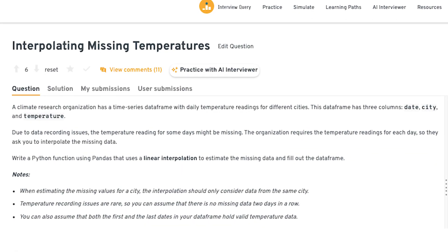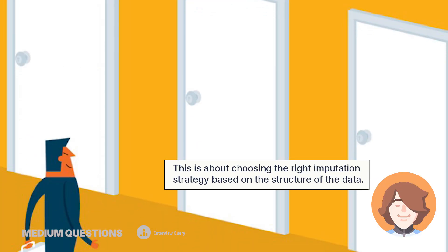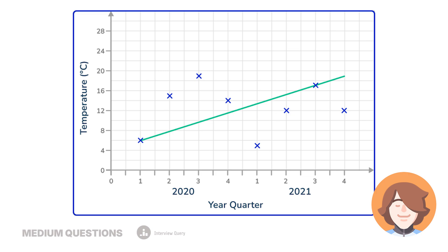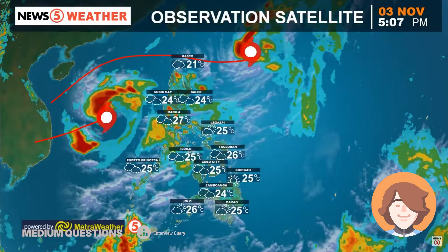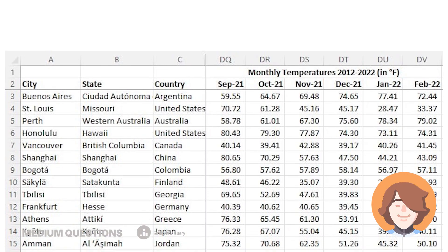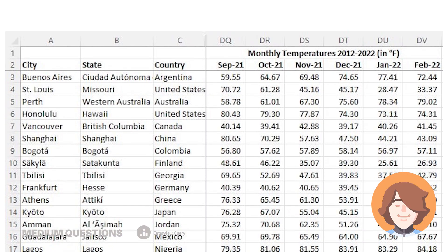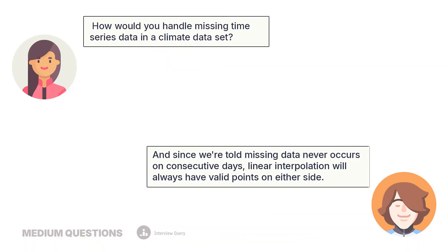How would you handle missing time series data in a climate dataset? This is about choosing the right imputation strategy based on the structure of the data. In time series problems, especially with sensor or measurement errors, context matters more than general rules. Since it's time series data and we know the first and last entries are valid, I'd use linear interpolation per city to fill the gaps. This assumes temperature changes gradually over time, which is reasonable for climate data. In pandas, I'd sort by city and date, then apply interpolate within each city group. It's more accurate than mean imputation because it respects the time ordering. And since missing data never occurs on consecutive days, linear interpolation will always have valid points on either side.